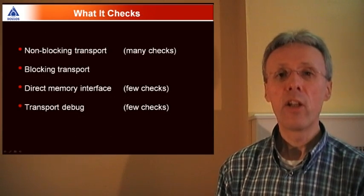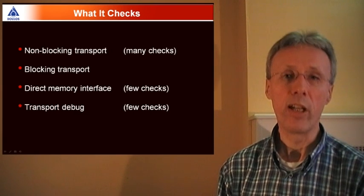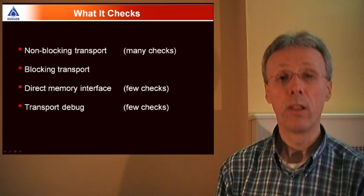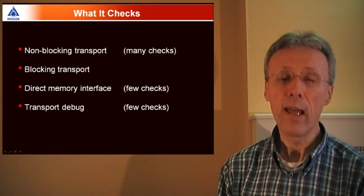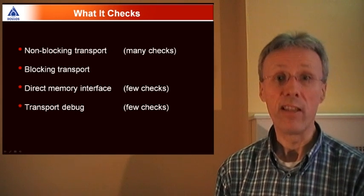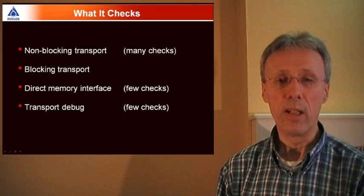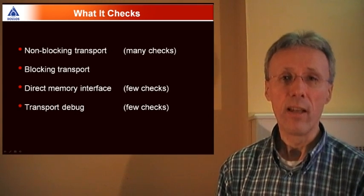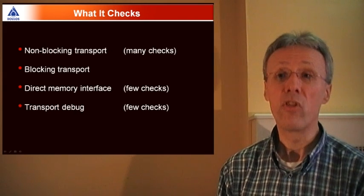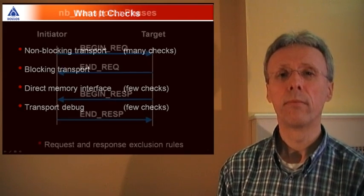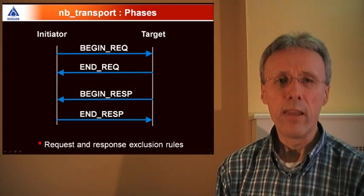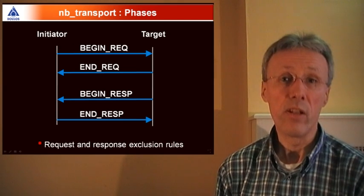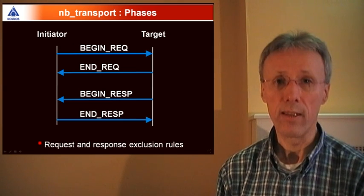The protocol checker checks all of the standard core interfaces: the blocking and non-blocking transport interfaces, the direct memory interface, and the debug interface. The non-blocking transport is the most complex, so there are most checks associated with NB transport. Direct memory and transport debug have relatively few checks. There's so few checks that I didn't even bother to turn off those checks when you set the number of checks to zero. I'll describe briefly the main checks that get performed and help you understand some of the features of the TLM 2.0 interfaces that the checkers are actually checking.